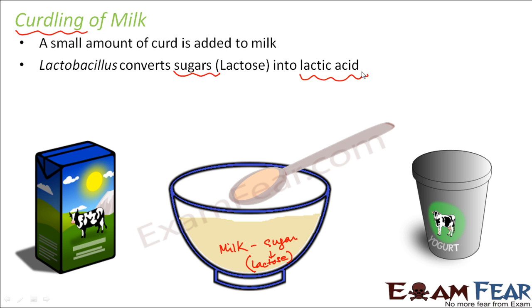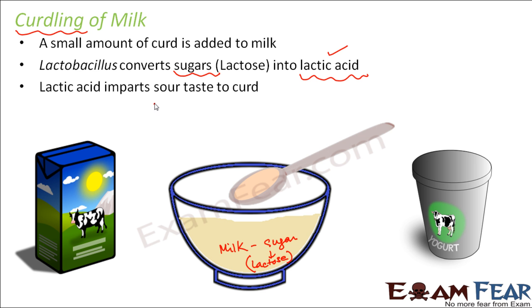When lactic acid forms, it coagulates and partially digests the milk protein. The structure of the milk protein gets altered due to the formation of lactic acid. This acid imparts a sour taste to the curd — that is why there is a big difference between the taste of milk and the taste of curd. Curd is sour due to the presence of acid, while milk is sweet due to the presence of sugar. Lactobacillus converts that sugar into acid.